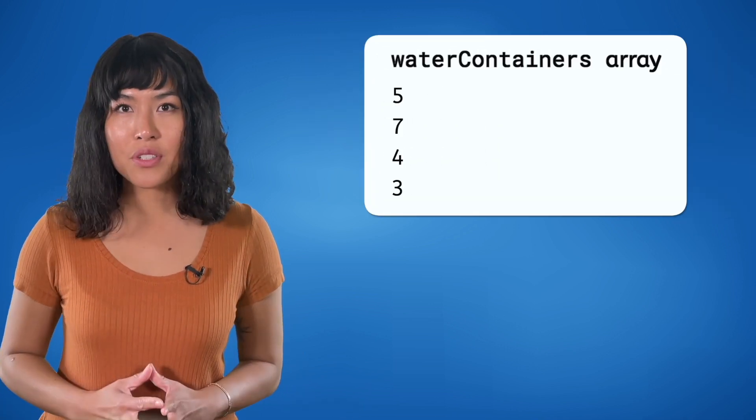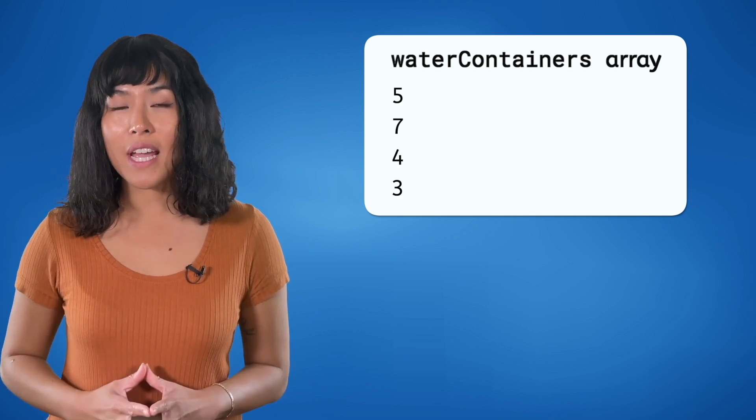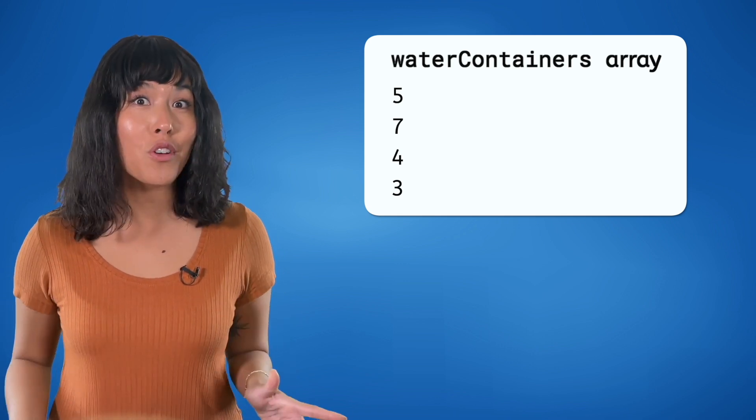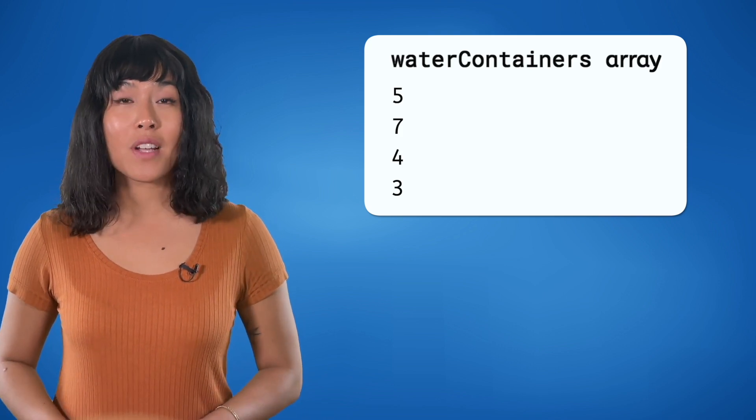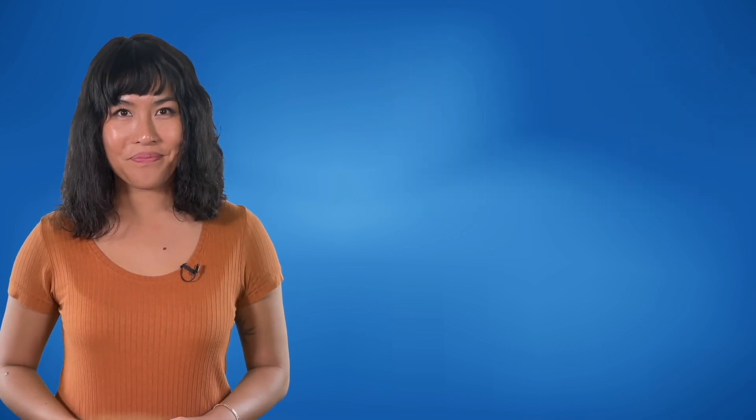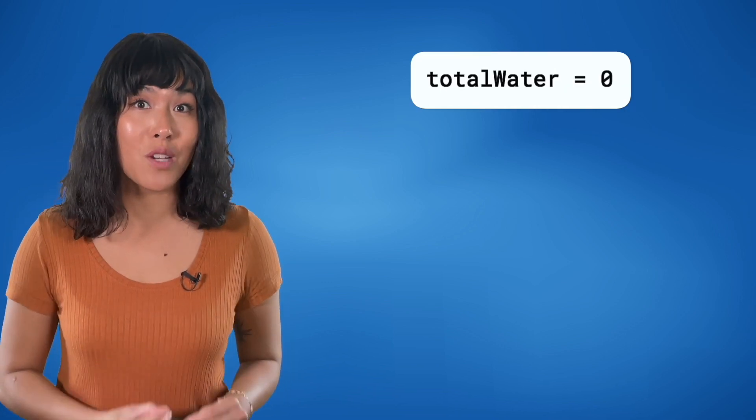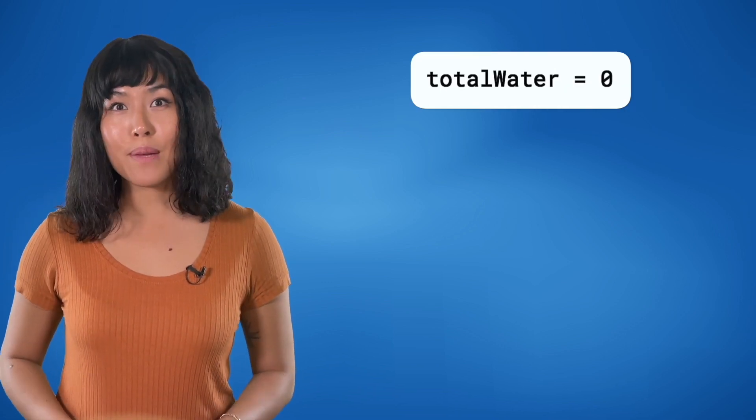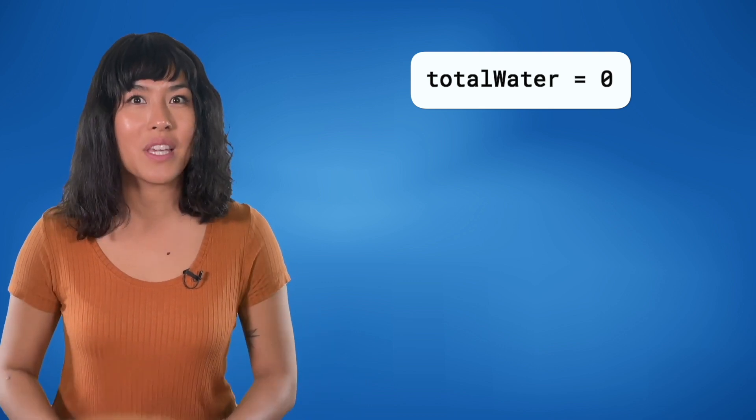Here's an example of calculating the sum of elements in an array. We have an array of integers named water containers, where each element represents the gallons of water in a container. We initialize a variable total water to zero. This variable will keep track of the total amount of water as we add the contents of each container.